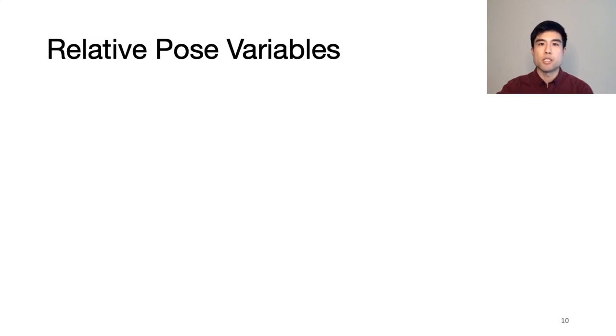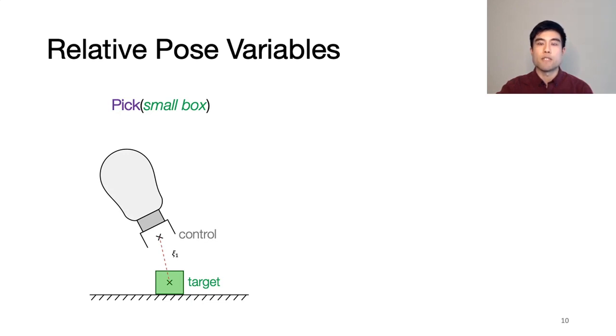At the most basic level, a manipulation task can be reduced to controlling a point relative to some target frame, like controlling the end effector relative to the box we want to pick up. For the pick box action, we define the pose variable to be the pose of the end effector relative to the box. Once the frame optimizer assigns a value to this variable, it can still be used no matter how the box moves, because the end effector will be controlled to maintain its pose relative to the moving box.